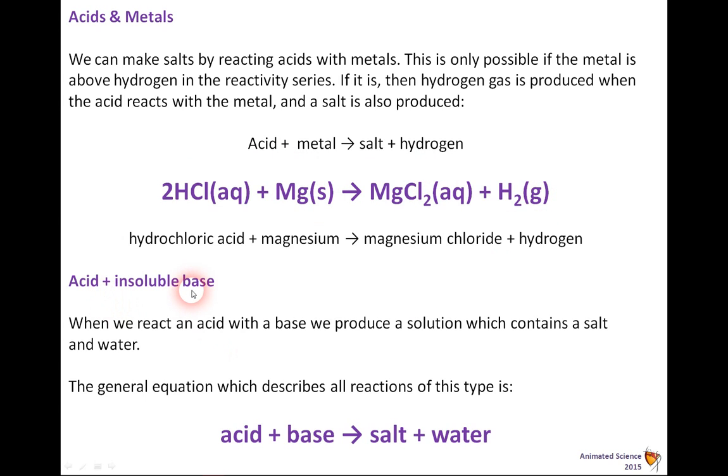An acid plus an insoluble base: if we react an acid with a base, we produce a solution which contains a salt and water. The general equation which describes all reactions of this type is acid and base make salt and water. AB makes SW.